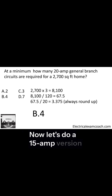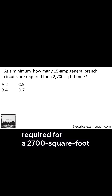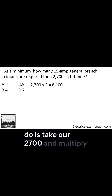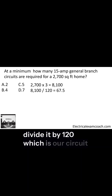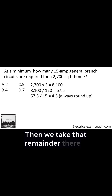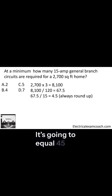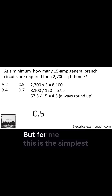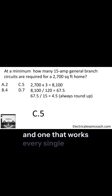Now let's do a 15 amp version. At a minimum, how many 15 amp general branch circuits are required for a 2700 square foot home? The first thing we're going to do is take our 2700 and multiply it by three VAs per square foot. Then divide that by 120, which is our circuit voltage. Then take that remainder and divide it by the size circuit — in this case, 15 amps. It's going to equal 4.5, and we always round up to five. There are other ways to calculate this, but this is the simplest method that works every single time.